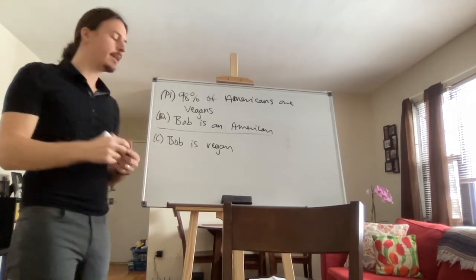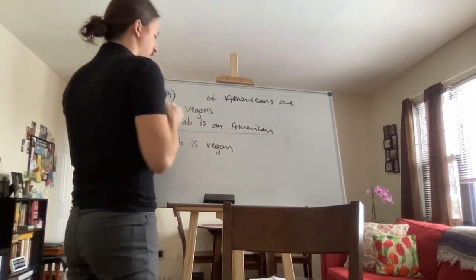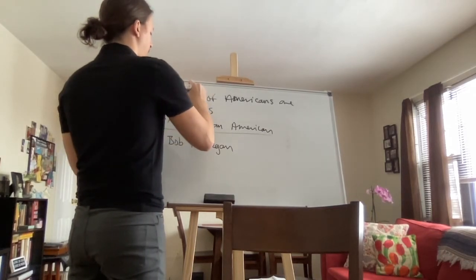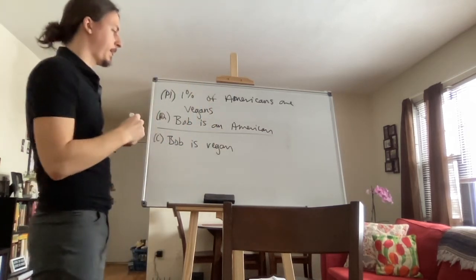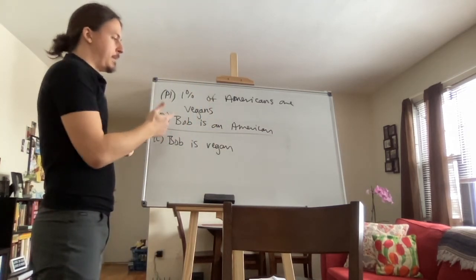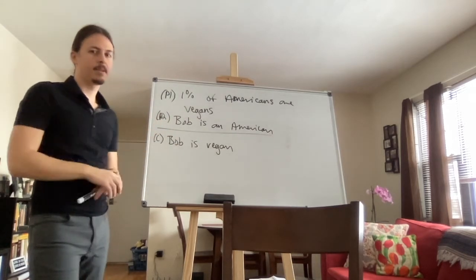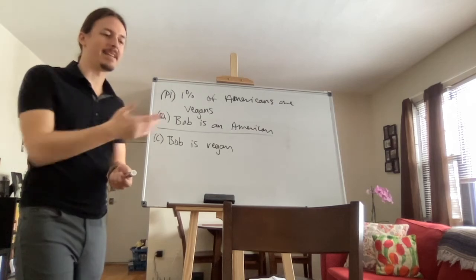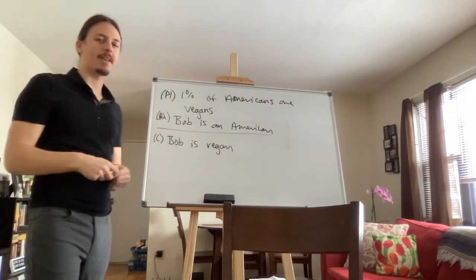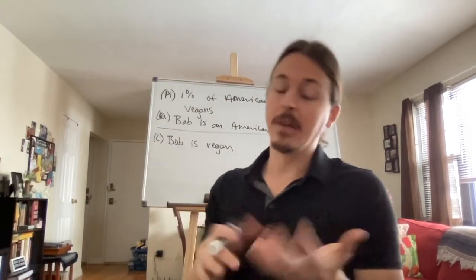What would a weak inductive argument look like? Say: one percent of Americans are vegan, Bob is an American, therefore Bob is a vegan. That's a weak argument — there's only a one percent chance, so you don't have adequate support. That's basically it.